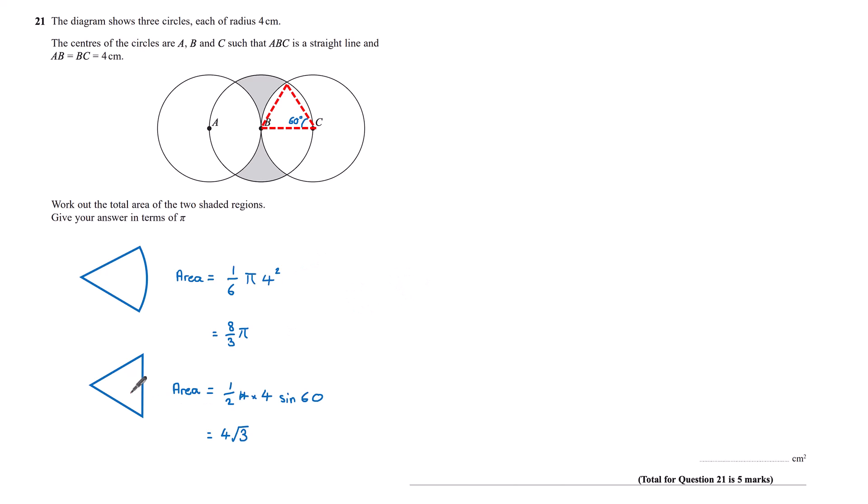Now I've got the area of the triangle and the sector, I can find the area of just this part of the sector by taking the area of the triangle away from it. And so taking the triangle away from the sector, I get the area of this segment. And so the area of my segment is eight thirds pi minus four root three.